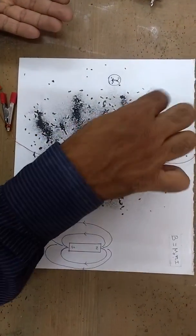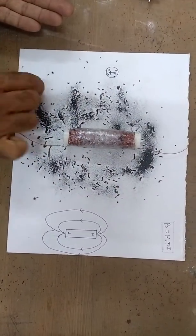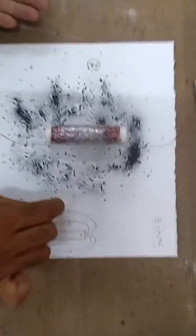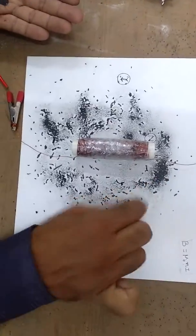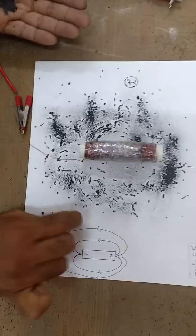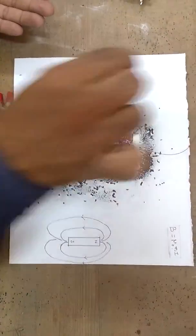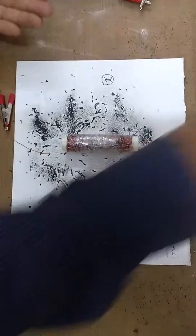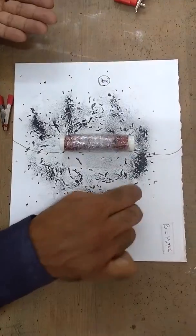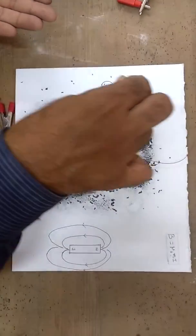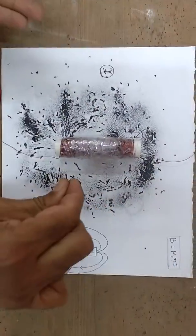I can find some field lines, but not to a greater visibility. Some formation is there. Let me increase the current. Definitely, the iron filings, they are giving you some pattern.